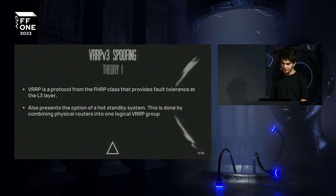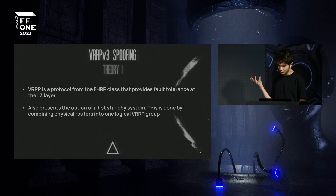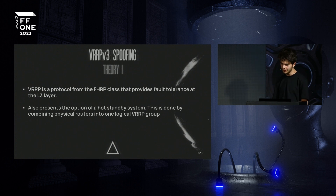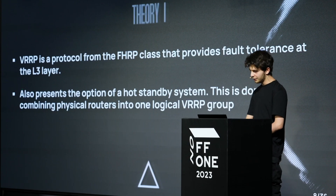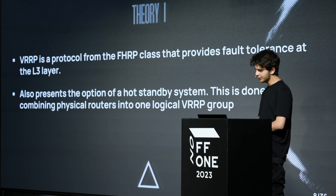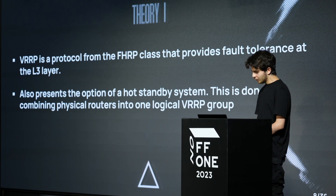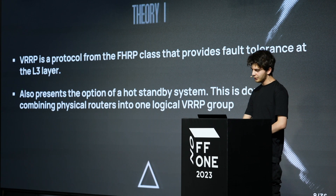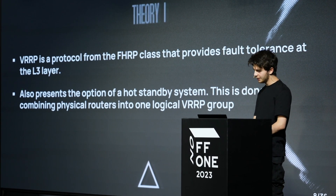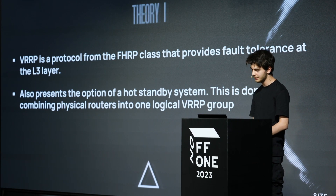VRRP is a protocol from the FHRP class. VRRP creates host standby by combining physical routers into one logical group, and then in this logical group a logical router is set up with a virtual IP address, which will be set up as the default gateway for hosts. VRRP is used by default in the context of RouterOS, and network engineers in most cases would not consider the completeness of the configuration. In MikroTik, VRRP is version 3, which creates additional issues because it doesn't have authentication mechanisms.